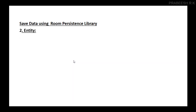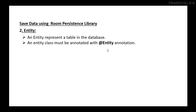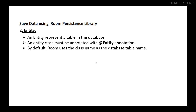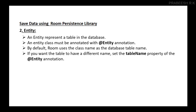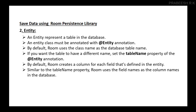Now let's learn about what is meant by Entity. An Entity represents a table in your database. An Entity class must be annotated with the annotation @Entity. By default, Room uses the class name as the database table name. If you want the table to have a different name, you have to set the tableName property for the @Entity annotation. By default, Room creates a column for each field defined in the Entity class, and Room uses the field names as the column names in the database.